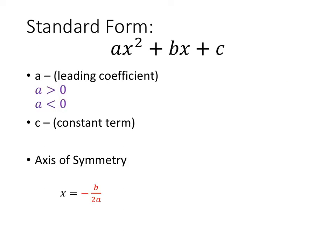The first thing we're going to look at is the form we'll be using most, which is standard form. We recognize standard form — we've seen it before. Standard form is ax² + bx + c. Just this equation alone will give us a ton of information about the way the graph is shaped and the way the graph behaves.